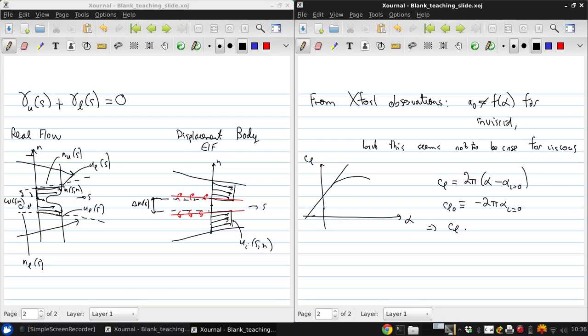But if we define the lift coefficient per unit span at zero degrees angle of attack to be C_l0, then what we get is that C_l we can write as 2π·α + C_l0. So C_l0 is this one on the graph, and α_L=0 is this one.